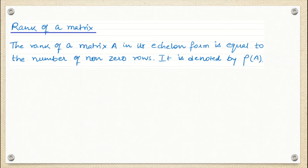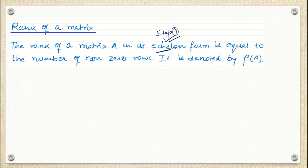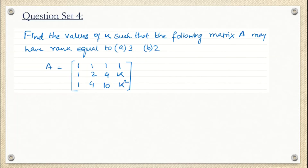The rank definition we have already discussed: if I have to find the rank of a matrix, two steps I have to follow. Step number 1 is to convert the matrix into echelon form. Step number 2 is to count the total number of non-zero rows, and that total number of non-zero rows is called the rank of the matrix. Based on that definition we are going to solve this question.